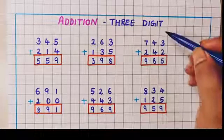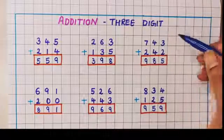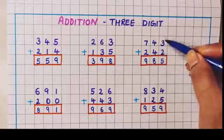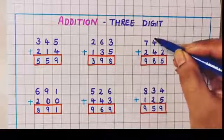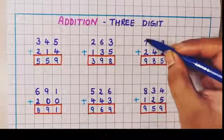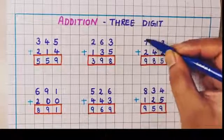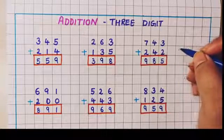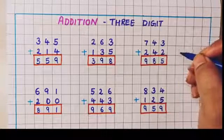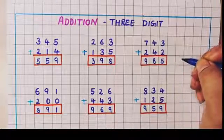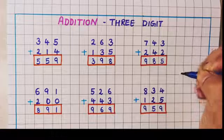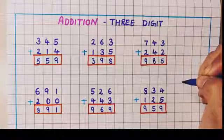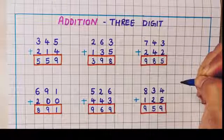So in three digit addition, first we are going to do the addition of the ones place numbers, then the tens place numbers, and then the hundreds place numbers. I hope the concept is clear to you. If you enjoyed this video, do give it a like, share this video, and subscribe to our channel. Bye.